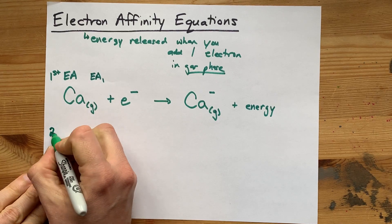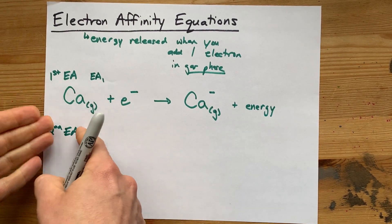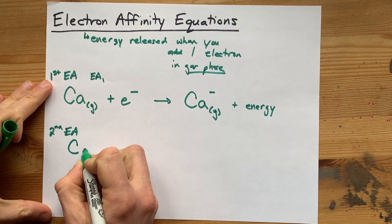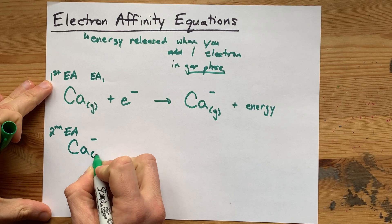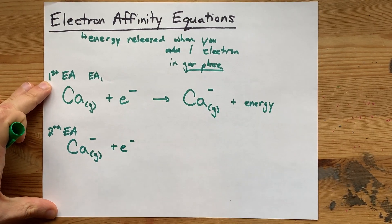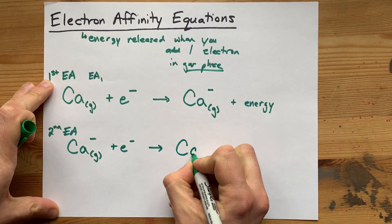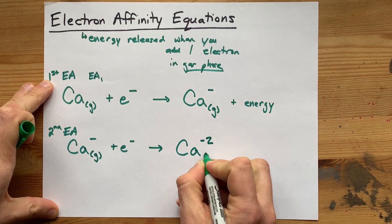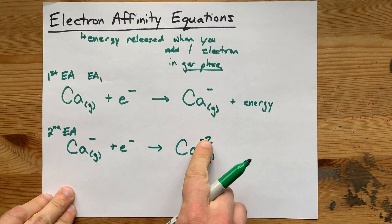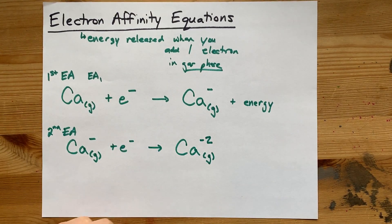Now, there is a second electron affinity where you start with the product of your first. The second electron affinity has you starting with Ca minus. And guess what? You add another electron. What's the new charge? It's minus two. You are continually adding electrons and notching your charge down, like deeper into the negatives.